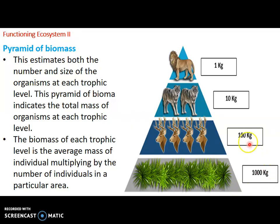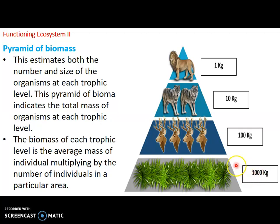Biomass, just like the pyramid of numbers, decreases as we move from the first trophic level through other trophic levels. To obtain biomass, you first count the number of organisms at each trophic level and then weigh them, allowing you to estimate the average biomass at a particular trophic level. There is a 10 percent decrease at each trophic level — for example: 1000, then 100 (10% of 1000), then 10 (10% of 100), then 1 (10% of 10).